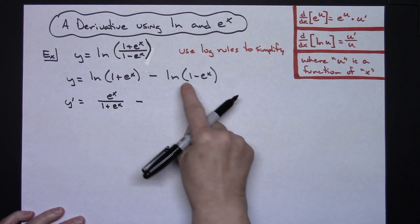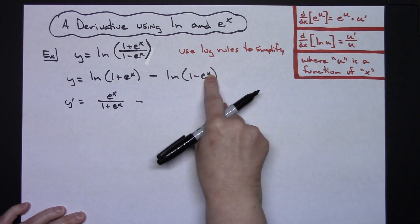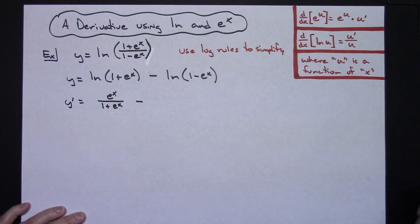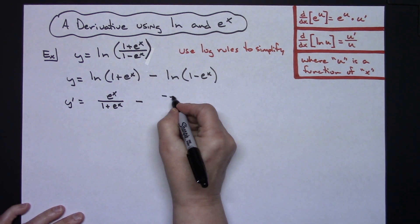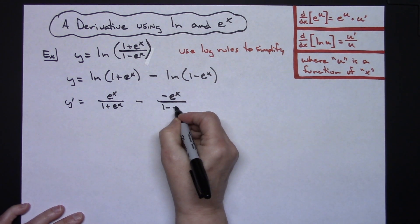Then I'm going to have a minus. I'm going to do this again, u prime over u. Derivative here will be a negative e to the x times 1, so just negative e to the x, and then all over the 1 minus e to the x.